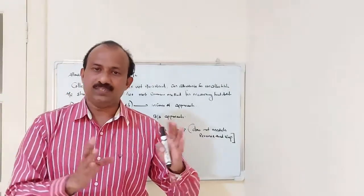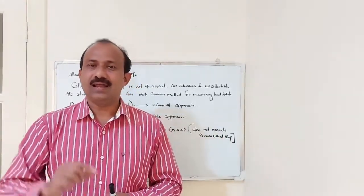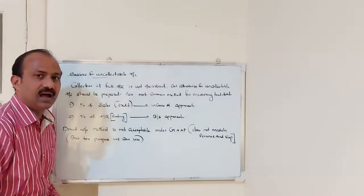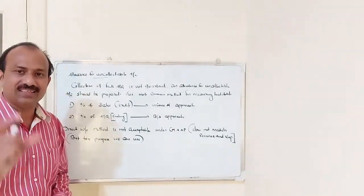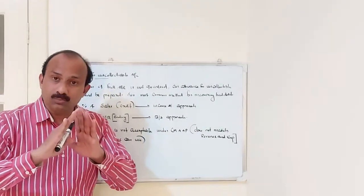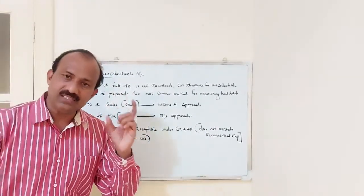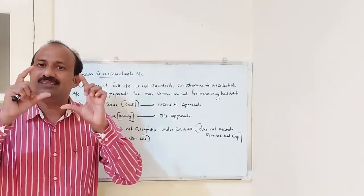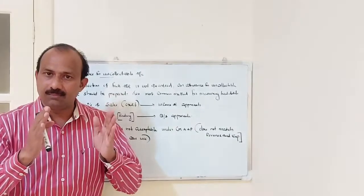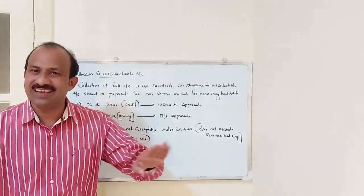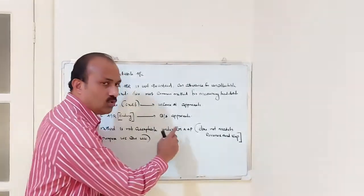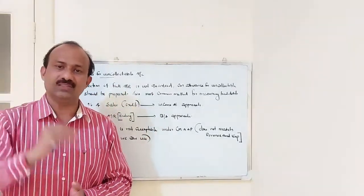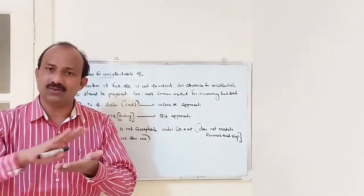Normally, especially in India, in our previous classes we applied the direct write-off method. However, the direct write-off method is not acceptable under GAAP. The reason is there is no matching of income and expenses. Matching concept says current year income should be matched with current year expense only; otherwise it will not be accepted by GAAP. Therefore, there is no direct write-off method — direct write-off means writing directly to the debtor's account, and it is not accepted by GAAP because the matching concept is not followed.